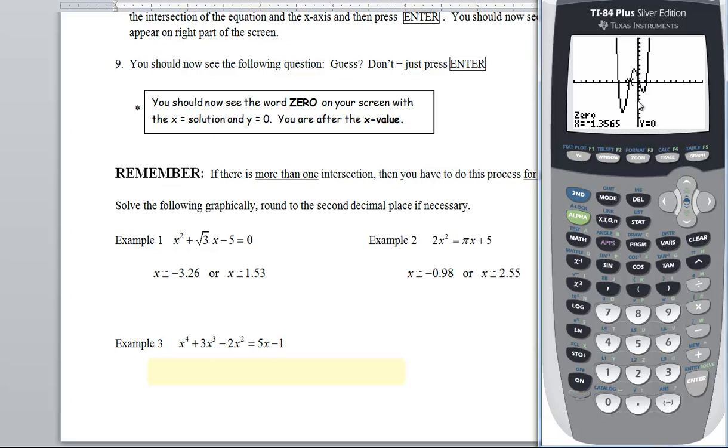Now we'll go for this one. Second trace, number 2. I'm going to type in negative 0.5 and 0.5 because it looks like it's very close to 0. Pretty close. So to the hundredths, that would be 0.19.